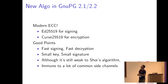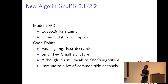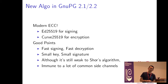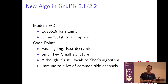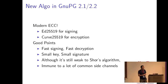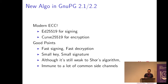I recommend use of modern ECC because of its good points. We have two things: one is Ed25519 for signing, and another is Curve25519 for encryption. They use the same curve, but one is for signing and another is for encryption or decryption. The good thing is it's quite fast for decryption or signing, the key size is small, and the signature size is small — like 32 bytes only. Although it's still weak to quantum computing, it's immune to a lot of common side channel attacks. So I really recommend use of modern ECC.